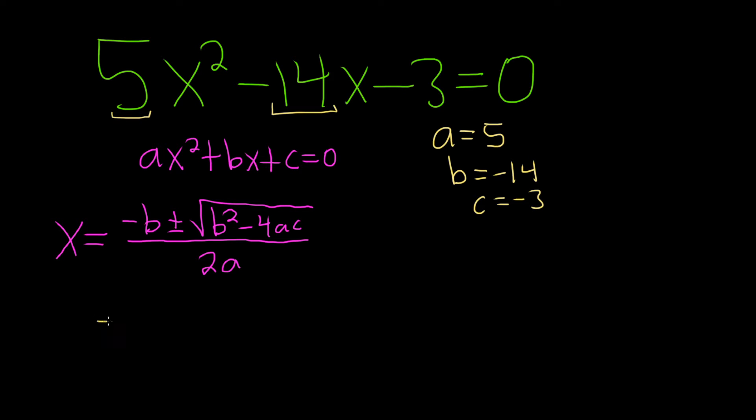Alright, so now we just plug it in. Negative b—so b is already negative, and there's a negative here, so it will become a positive. So 14 plus or minus the square root of b, so negative 14 squared, minus 4, and then a is 5, and c is negative 3. And it's all being divided by 2 times a, so 2 times 5.